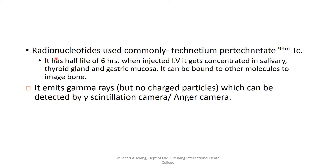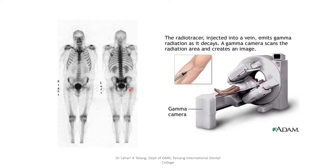A radionuclide dye is injected into the patient. The one commonly used is technetium pertechnetate, which has a half-life of six hours. When injected intravenously, it gets concentrated in glands such as the salivary gland, thyroid, and gastric mucosa, and can also be bound to other molecules to image the bone. It emits gamma rays but not charged particles, which can be detected by a gamma scintillation camera or an Anger camera. When the dye is injected and the patient is inside the gamma camera, it concentrates in parts of the body and the imaging modality detects function or defects in those areas.